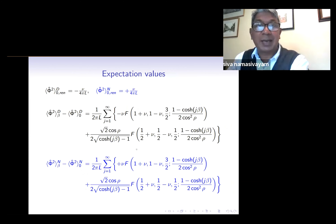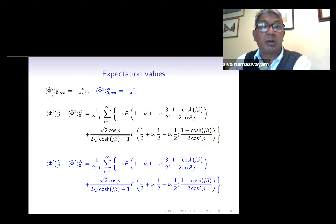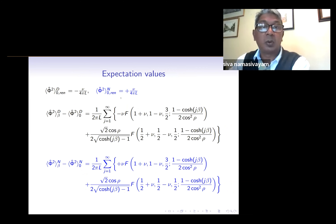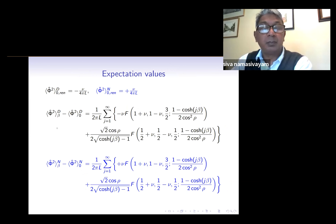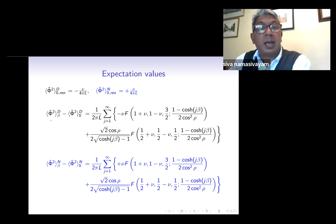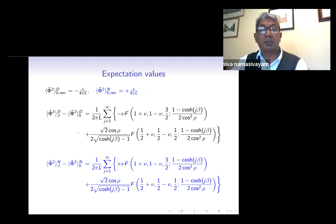With these Green's functions we have calculated the renormalized vacuum expectation values of the square of the field with Dirichlet and Neumann boundary conditions. We can show that these are constant — independent of the radial coordinate — and depend only on nu. Interestingly, they differ between Dirichlet and Neumann only by a sign. To calculate the thermal expectation values, we consider the difference between the thermal and vacuum expectation values, since the divergences are common to both so we don't need to renormalize again, and then simply add on the respective vacuum expectation values.